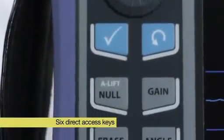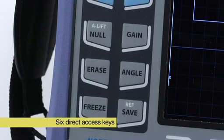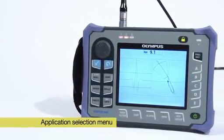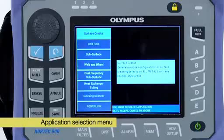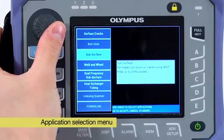The Nortec 600 also features a set of six direct access keys in order to speed up the most common operations such as adjusting the gains or phase angle. The instrument includes several new highly acclaimed features such as the new application selection menu. This menu streamlines the configurations of the instrument for a given inspection literally within seconds.